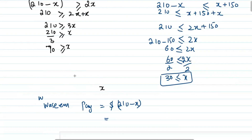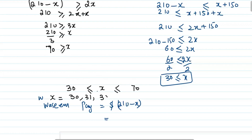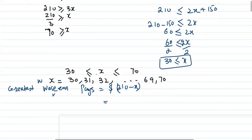So the range of values of x is: x greater than or equal to 30 and less than or equal to 70. The smallest value is 30 and greatest value is 70. The range of x runs from 30, 31, 32 ... up to 69, 70. Wasim's payment is greatest when x is smallest. So when x equals 31 (the smallest integer greater than 30), the greatest amount Wasim pays is 210 minus 31.